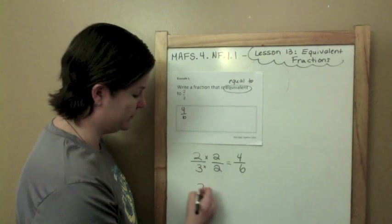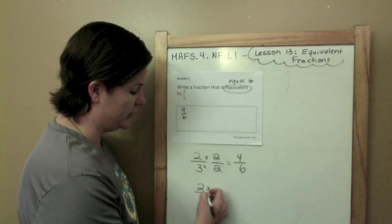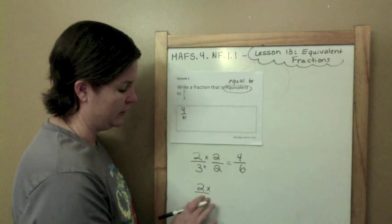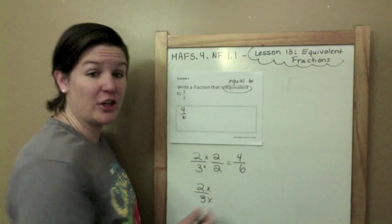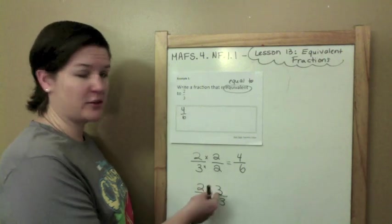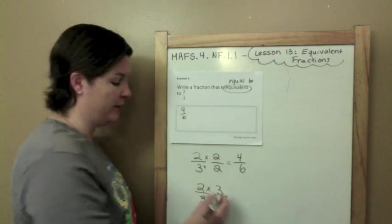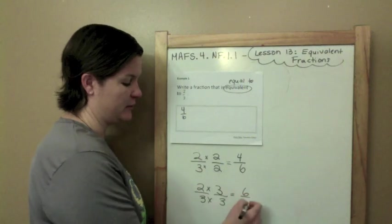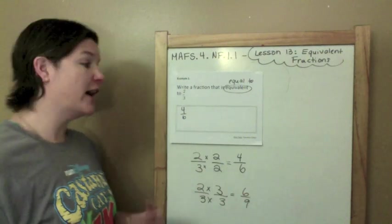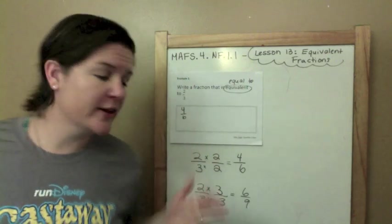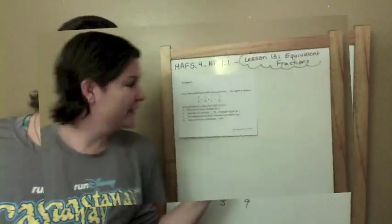Now when I do this and multiply across, I will get 4 sixths. That is a fraction that is equal to 1. So I'm going to put 4 sixths in my box. Let me show you one other one. 2 thirds, let's multiply by a fraction that is equivalent to 1. So let's do 3 thirds this time because 3 divided by 3 is 1.